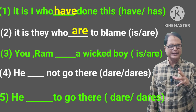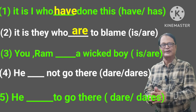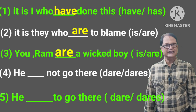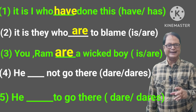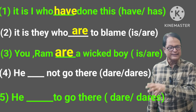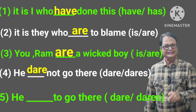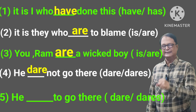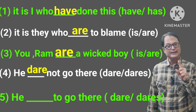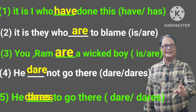You and Ram — dash — a wicked boy. Both 'you' and 'Ram' are present, and they are treated separately. Next, regarding 'dare': if the sentence is negative, 'dare' is used — He dare not go there. If the sentence is positive or interrogative, 'dares' is used — He dares to go there.